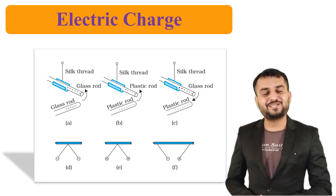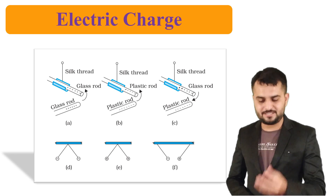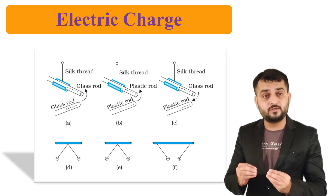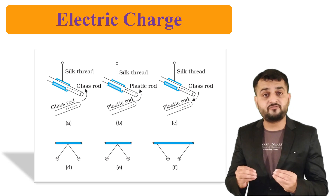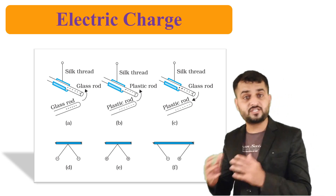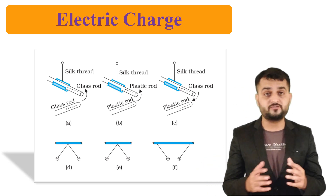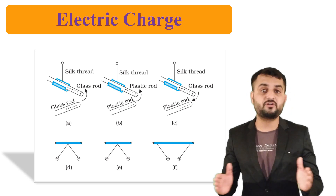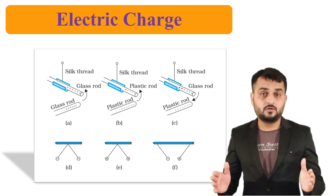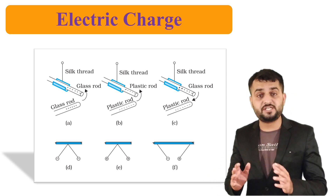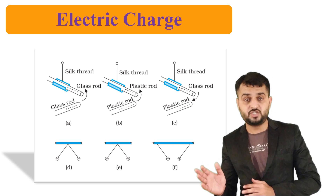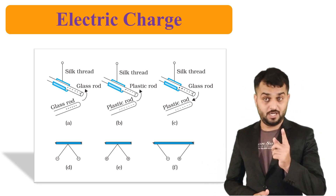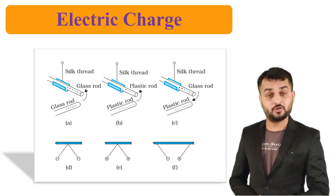In another experiment, pit balls are taken and rubbed with the same kind of cloth — either silk or wool. If rubbed with the same material, they repel. But if one is rubbed with silk and one with wool, they attract.